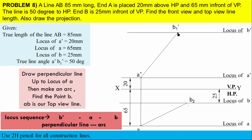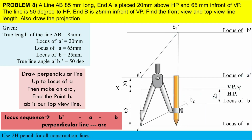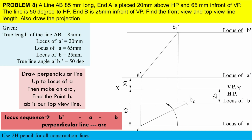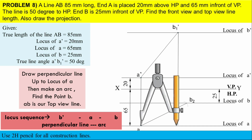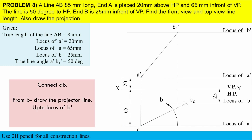From point B1' we draw a perpendicular line up to the locus of A. Then from that intersection point, make an arc - the distance from A to that intersection point is our radius. Rotate that line up to the locus of B. That intersection is our point B. Join A and B with HB pencil - that is our top view apparent line.